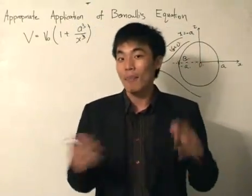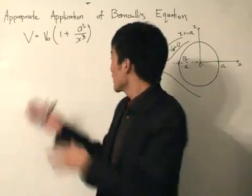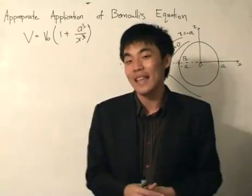Very simple, just identify a streamline, apply the equations at two points of the streamline using Bernoulli's equation. It's very easy as that.